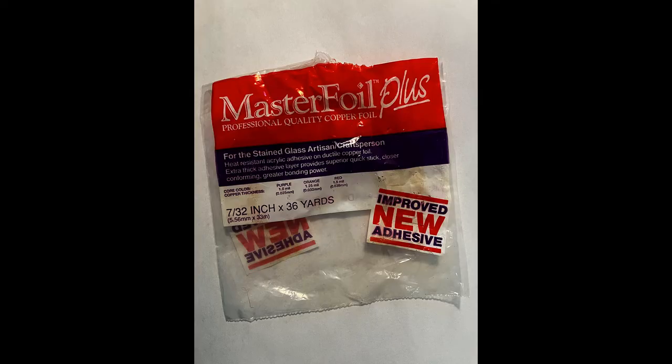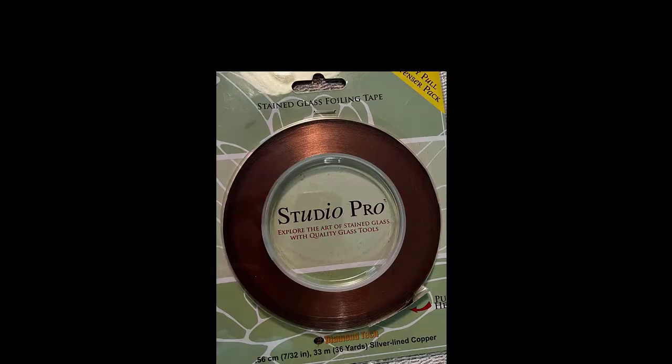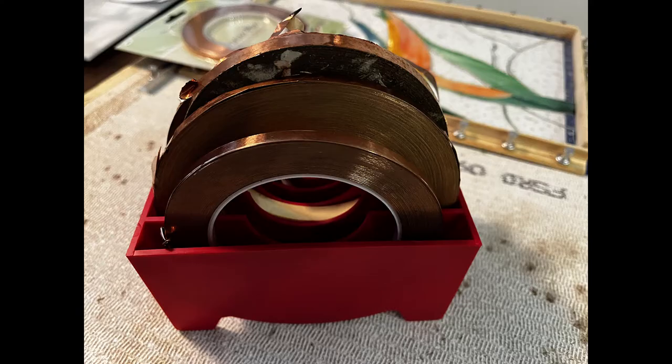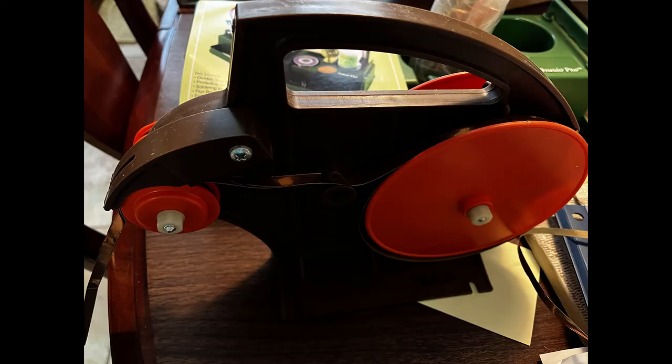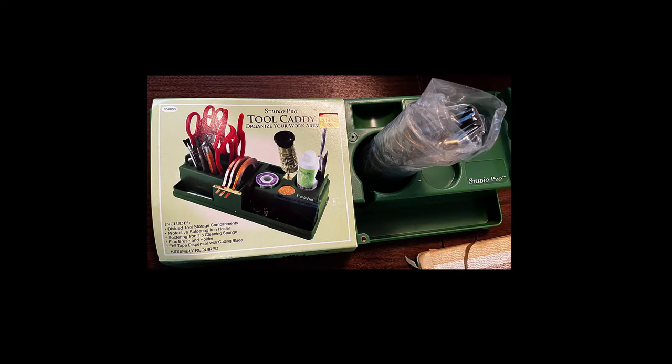Your stained glass is going to be three millimeters wide, so you need to cover that. It depends on how much foil you want to cover and how much solder you want to see on your piece. I've used the 7/32nd primarily, but I've also used the quarter inch. These are typical holders that can hold your copper foil so it doesn't run off with you, because it's very slippery. This is a tool caddy that can hold your soldering iron.